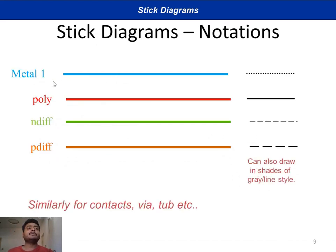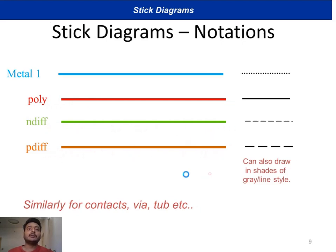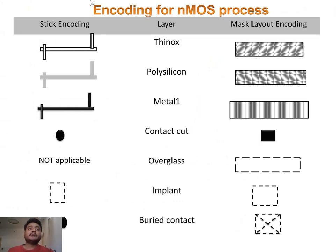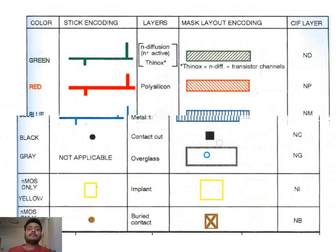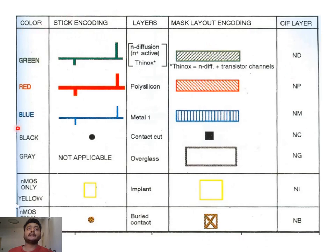Regarding color notation: the metal layer is shown as a stick in blue, polysilicon in red, N-diffusion in green, and P-diffusion in orange. When you are transforming into mask encoding, you draw a rectangular box with different stripes — THINOX stripes for diffusion, polysilicon drawn like this, and the metal layer drawn vertically. Contacts are shown as a dot representation. The contact indication in the actual layout is different. This encoding can be seen in your textbook — it is taken from the Pucknell textbook.